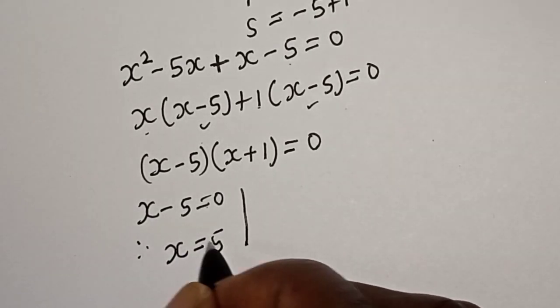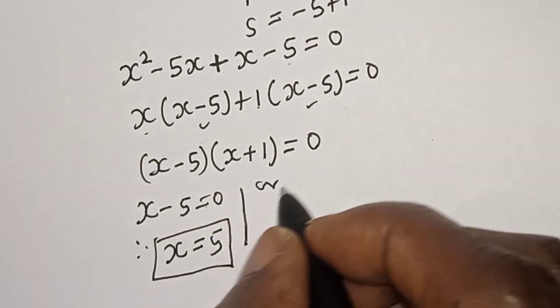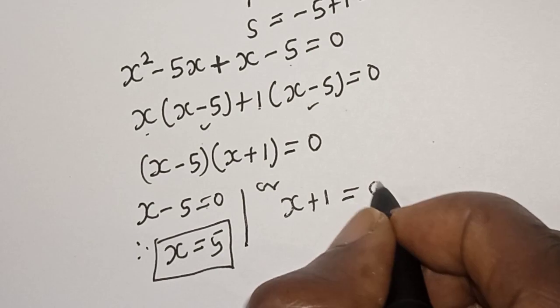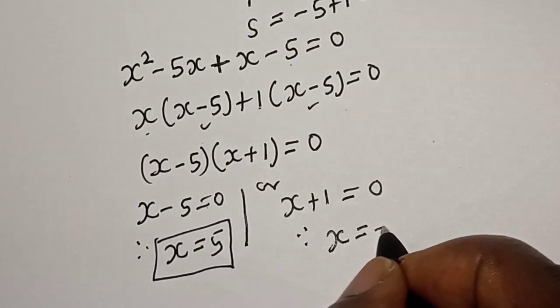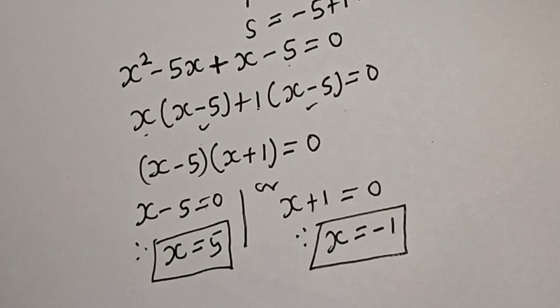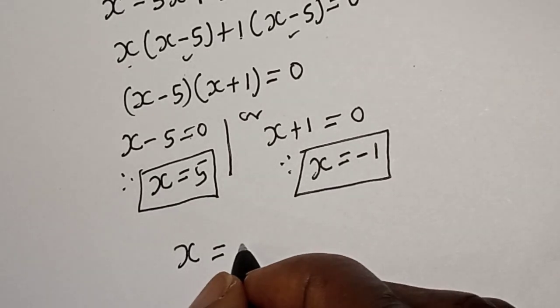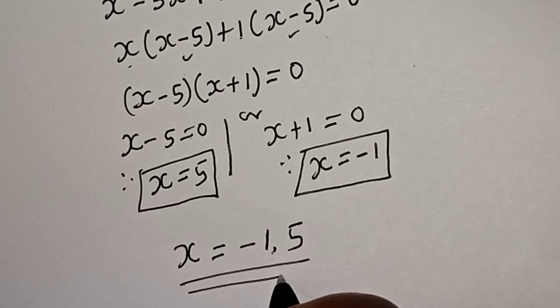Therefore s minus 5 equals 0, so s is equal to 5. Or second case, s plus 1 is equal to 0, therefore s is equal to minus 1. Now our final answers are s is equal to minus 1 or s is equal to 5.